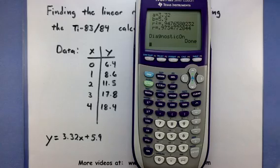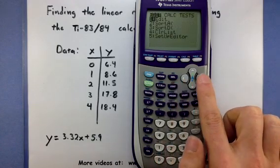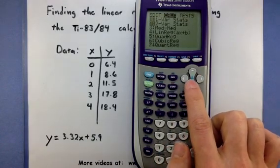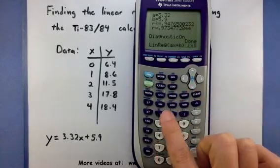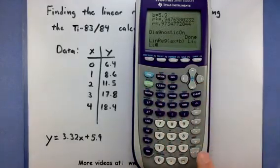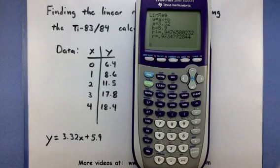Then basically follow the steps of going into your stat, calc, find that linear regression, give it list 1, comma, list 2, enter. And now you should definitely see the R squared and R.